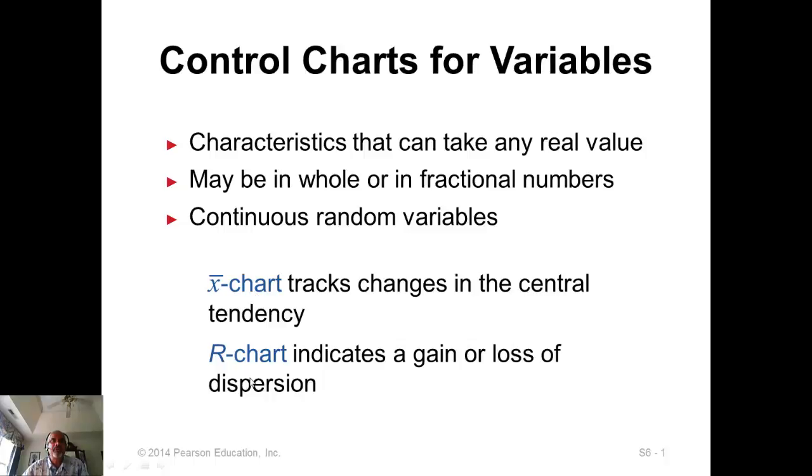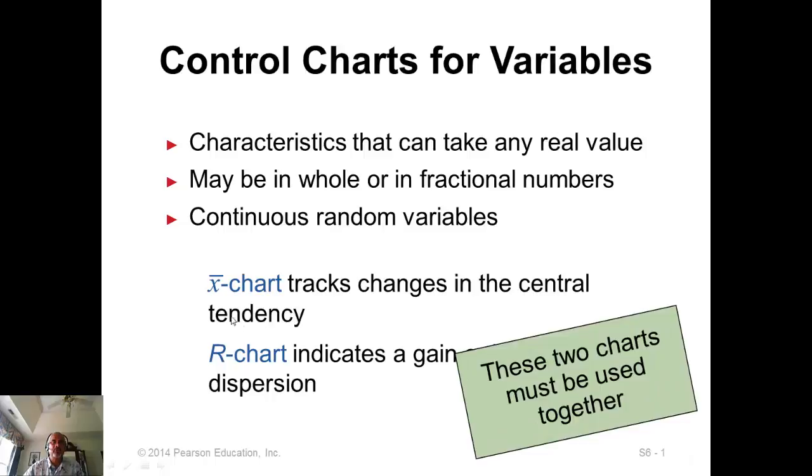And the variable charts, there are two of them: X-bar chart and R chart. X-bar chart tracks the changes in the central tendency, the average value. And the R chart is about the total dispersion of the values. These are for continuous random variables. The variables take a continuous value, it's not discrete. These are characteristics that can take any real value, may be whole numbers or fractional numbers. And these two charts always go together. You will never have only X-bar chart and not R chart, or only R chart and not X-bar chart.